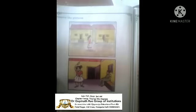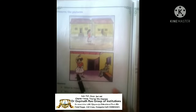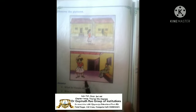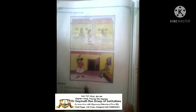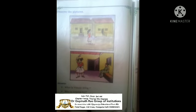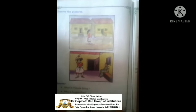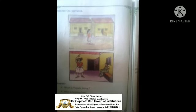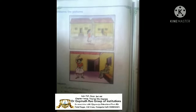Children, here are two pictures. This girl's name is Vimla. What is Vimla doing? Vimla is dancing. Who is helping her? Her mother helps Vimla. Do your neighbors help you in your work? Yes. Do you help your neighbors? Yes. Develop the habit of helping neighbors.